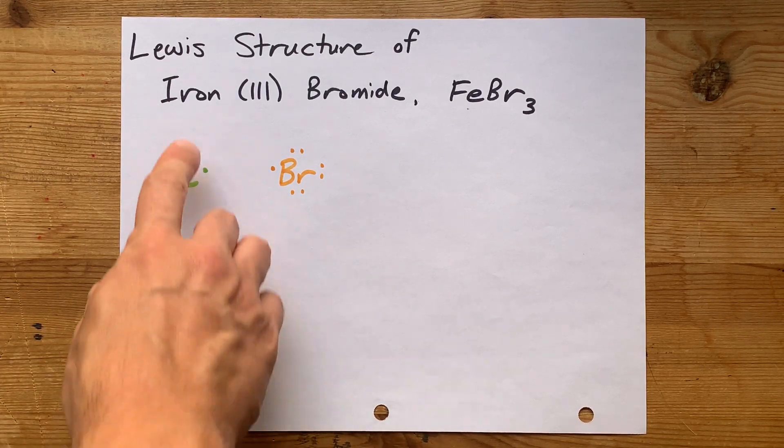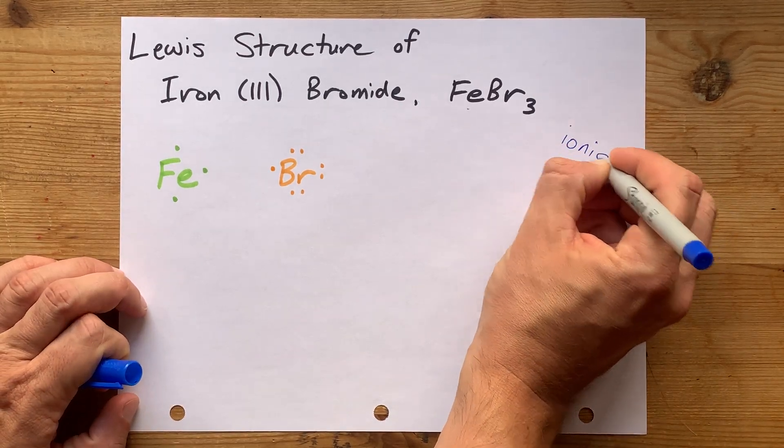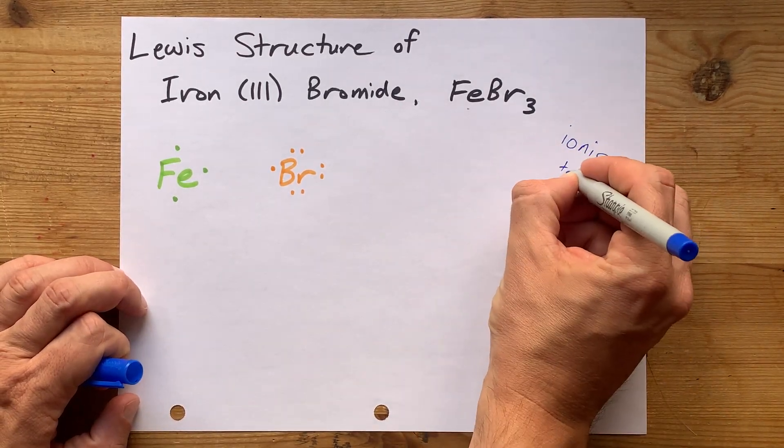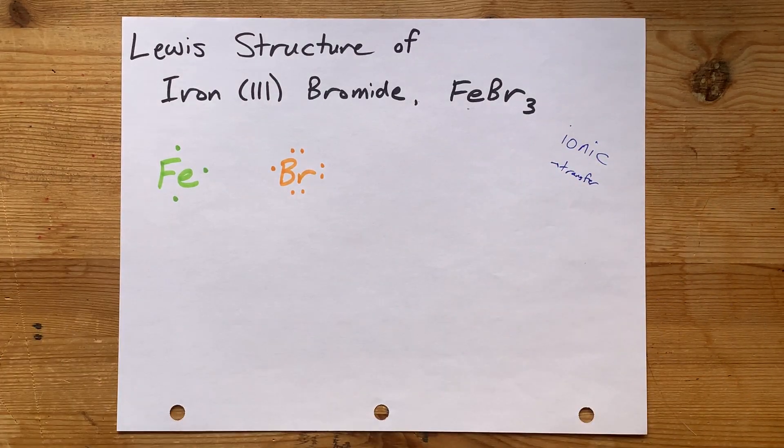Now, as a reaction between a metal and a non-metal, we're going to form an ionic compound. That's a transfer of electrons from metal to non-metal.